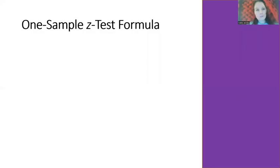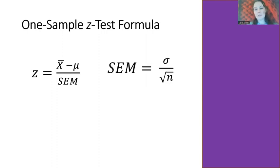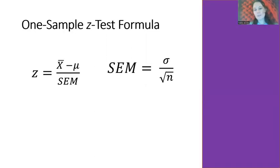Our formula for the one-sample z-test: Z equals, in the numerator, X-bar minus mu — that is our sample mean minus the population mean — divided by the SEM. To get the SEM, we take the population standard deviation and divide it by the square root of our sample size.